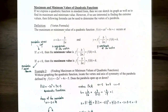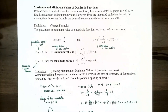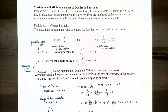Let's talk about maximum and minimum values of a quadratic function. If we express the quadratic function in standard form, we can sketch its graph and find the maximum and minimum value pretty quickly. However, if we're only interested in finding the extreme values — the local maximum or local minimum value depending on the shape of the parabola — there's actually a formula that can be used to determine the vertex without graphing or even converting to standard form.